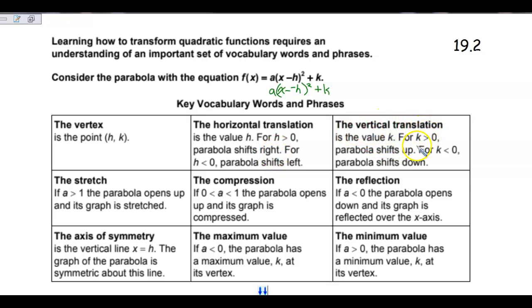Vertical translation is the movement up and down. So if it moves up from the parent, it is k is greater than zero. And if it's shifting down, it's k is less than zero.